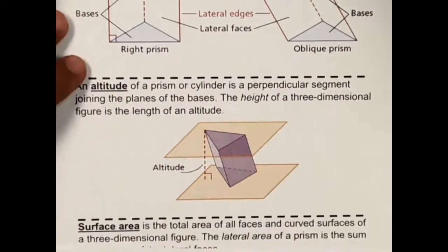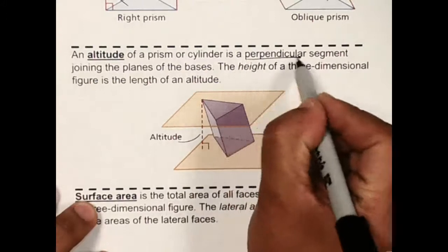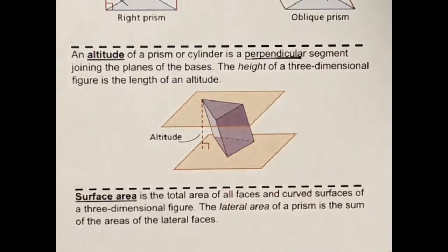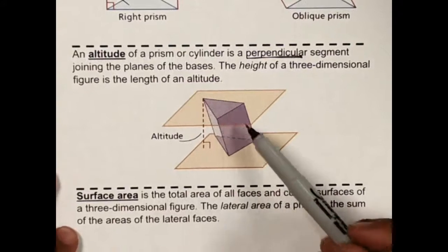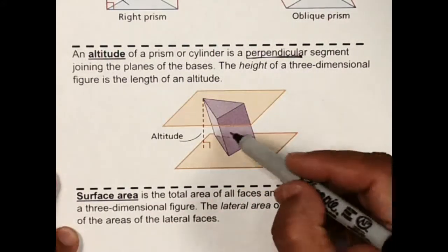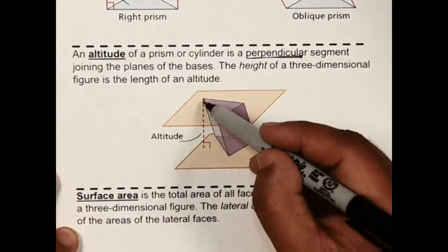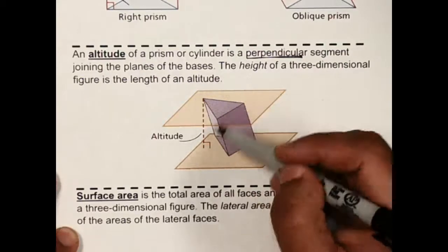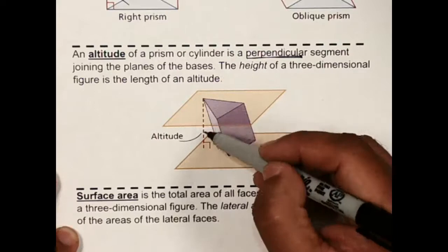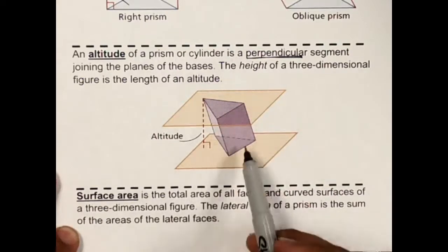There's also a lot of vocabulary here at the front. An altitude of a prism or cylinder is a perpendicular segment joining the plane of the bases. So with a slanted prism, the angles are not 90 degrees, so we'd have to draw an altitude or height. Remember that altitude and height mean the same thing — the altitude or height has to be 90 degrees from the base.